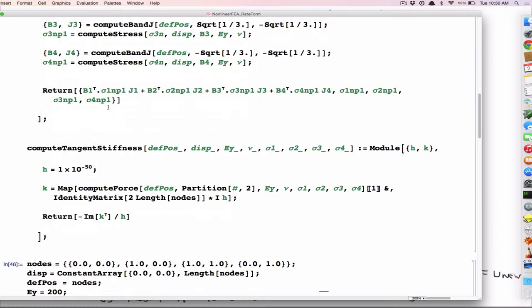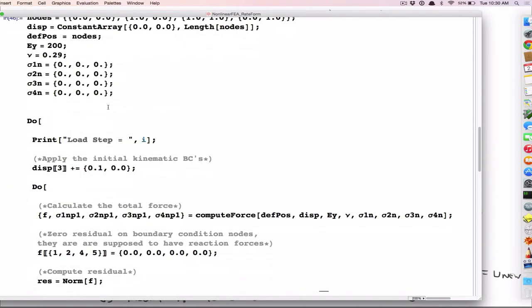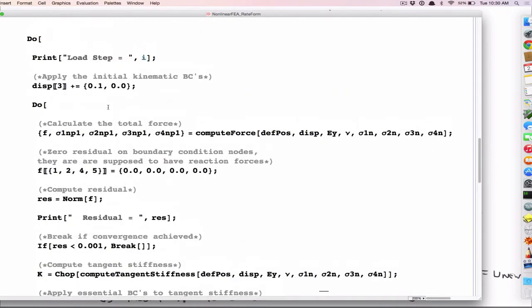So those are the functions I'm going to use to do Newton's method. So in Newton's method, I'm going to have two sort of loops. The outer loop is going to be where I apply my displacement increments. So I'm going to apply a displacement increment and let it equilibrate with a Newton iteration. When it's equilibrated, I'm going to apply another displacement increment and let it equilibrate. Apply another one and let it equilibrate. So the outer loop is where I'm doing that.